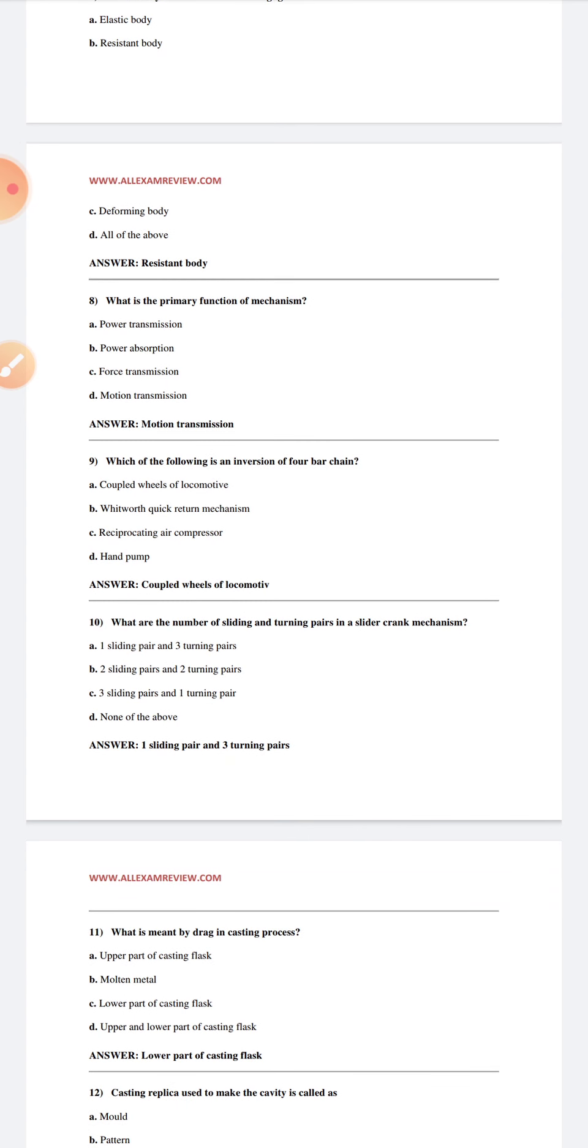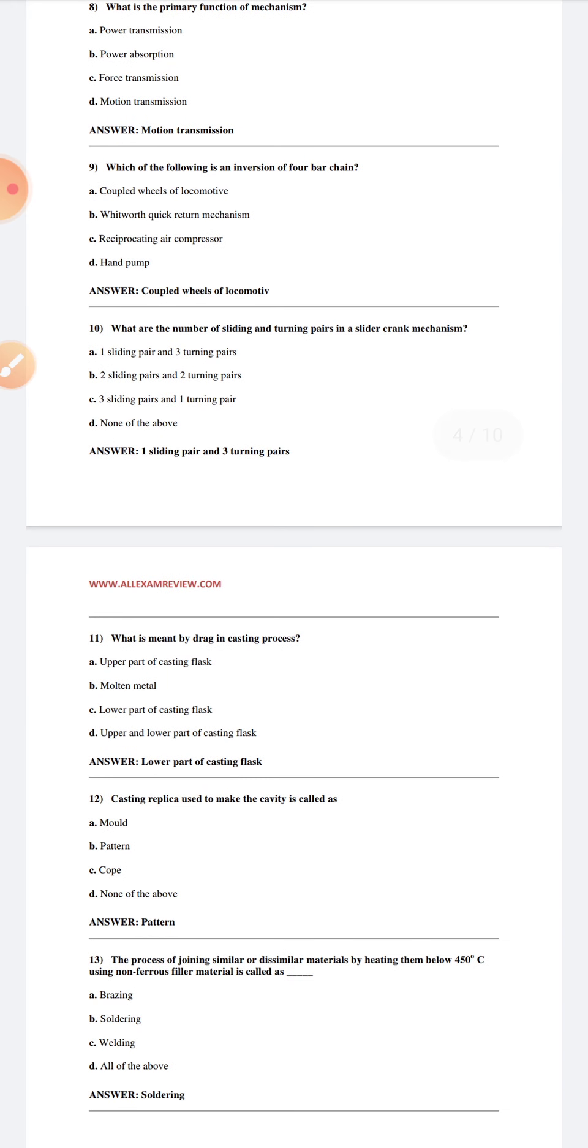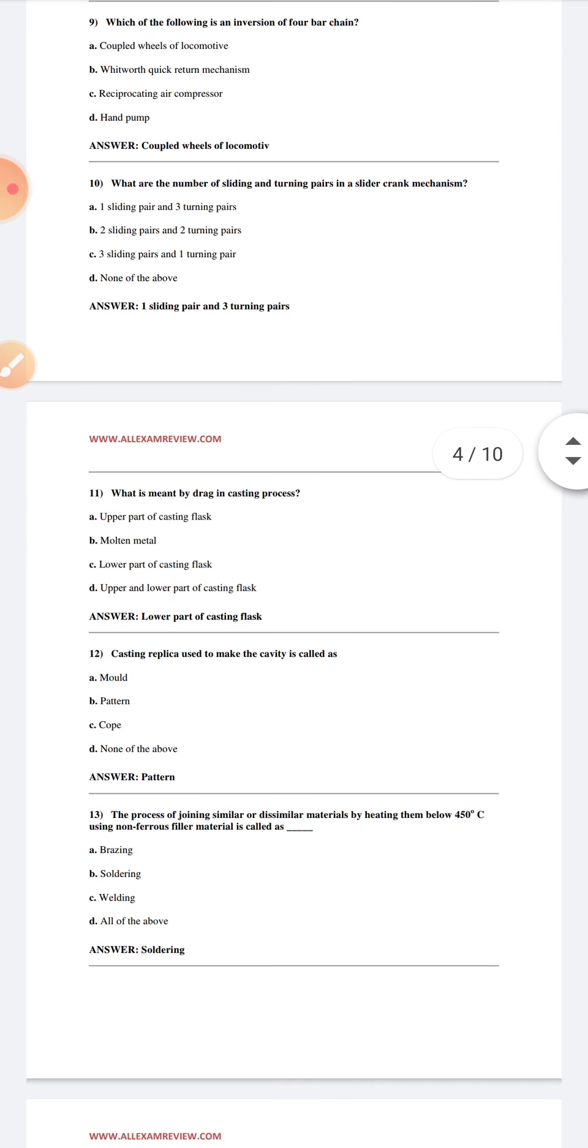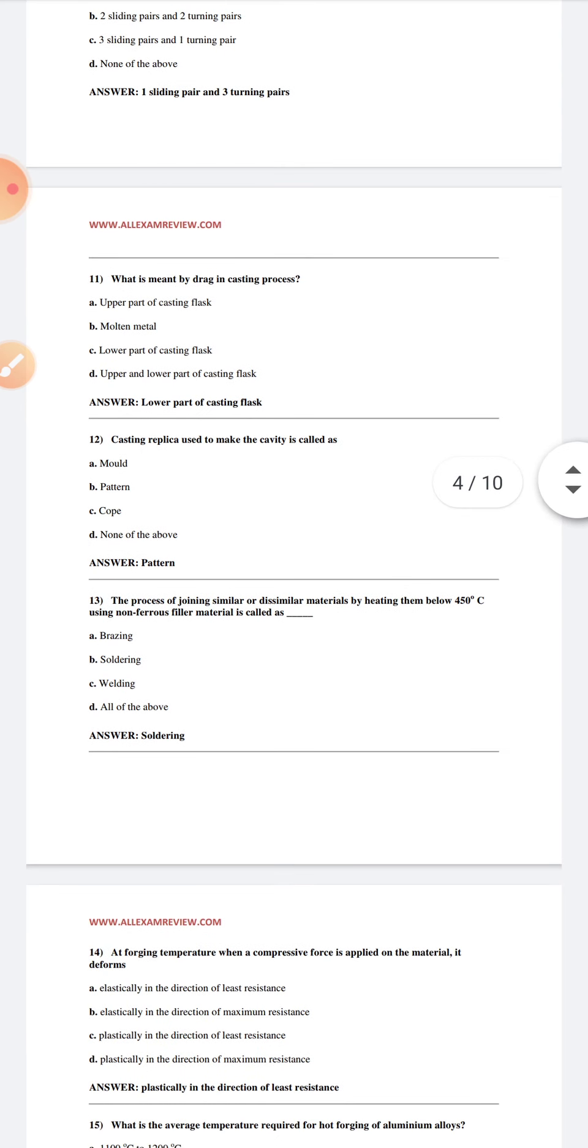Which of the following is an inversion of four bar chain? Coupled wheel of locomotive. What are the number of sliding and turning pairs in a slider crank mechanism? One slider, three turning pairs. What is meant by the drag in cast process? Lower part of casting flask. Replica used to make the cavity is called as pattern.